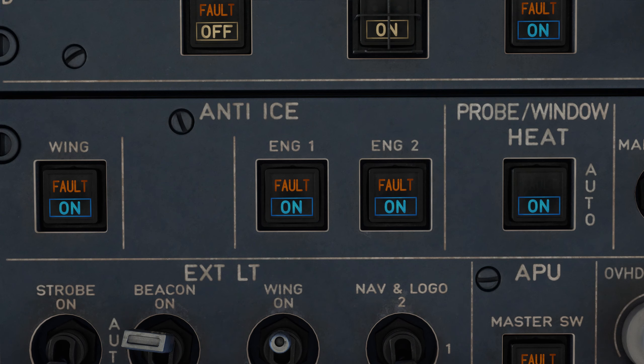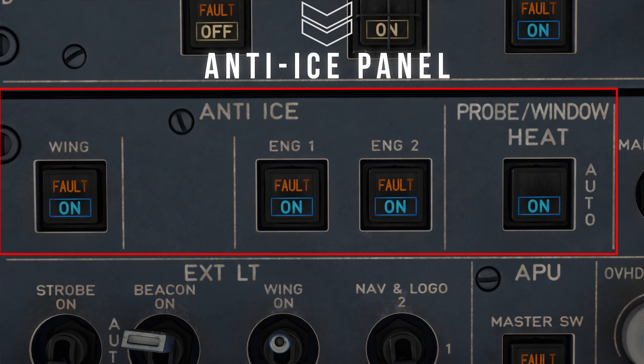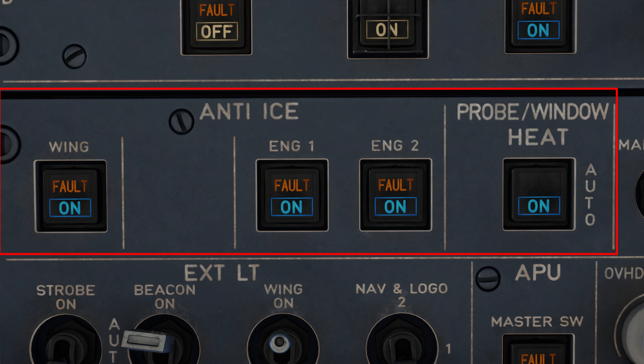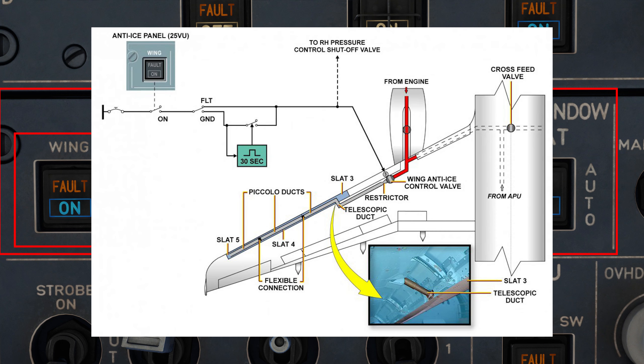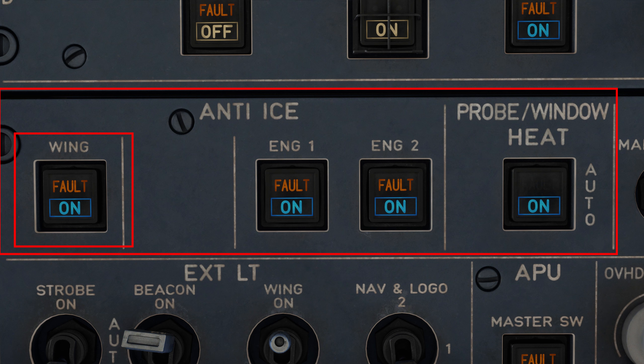Coming underneath, we have the anti-ice panel, which, as the name implies, is responsible for preventing ice from building up in and on crucial areas of the aircraft's frame. On the left here, we have the wing anti-ice switch. The three outboard slats on each wing have pneumatic bleed air valves inside of them, which can supply hot bleed air to prevent icing on the wing. When no light is illuminated, the wing anti-ice is turned off. An on light is illuminated when pilots manually turn the anti-ice system on, and a fault light implies a fault with the wing anti-ice system.